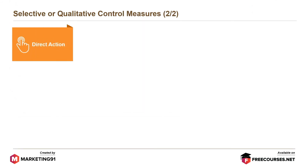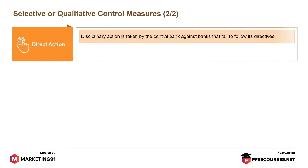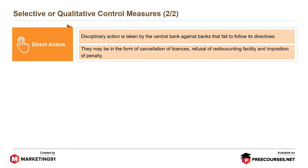Next is direct action. Disciplinary action is taken by the central bank against banks that fail to follow its directives. They may be in the form of cancellation of licenses, refusal of re-discounting facility, and imposition of penalty.